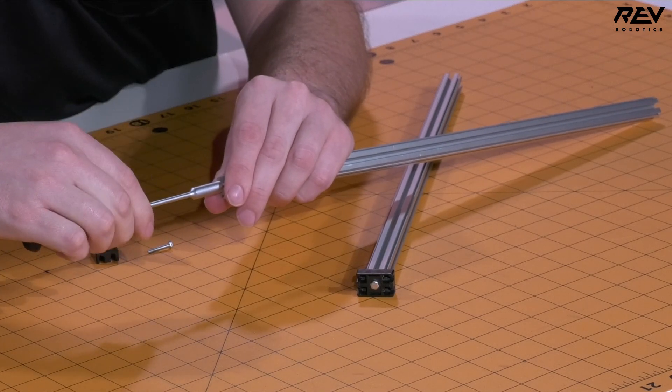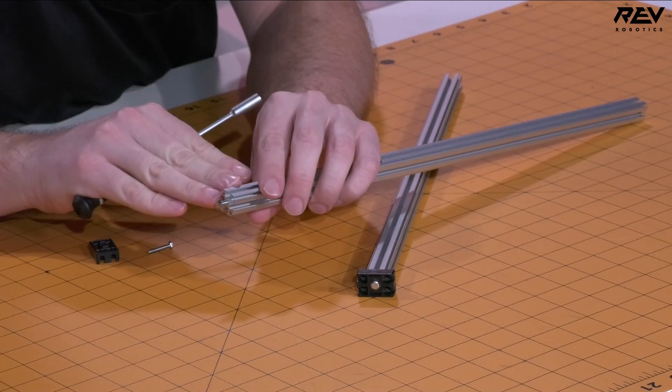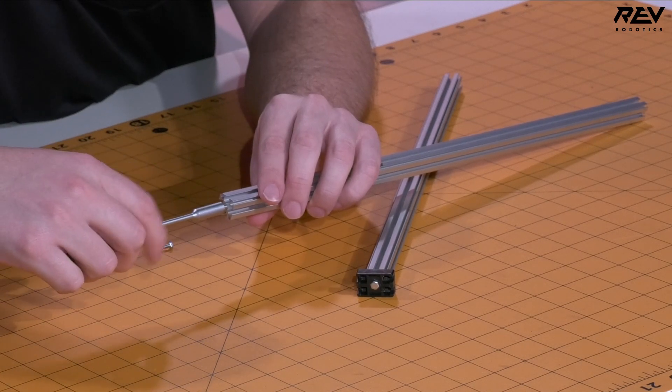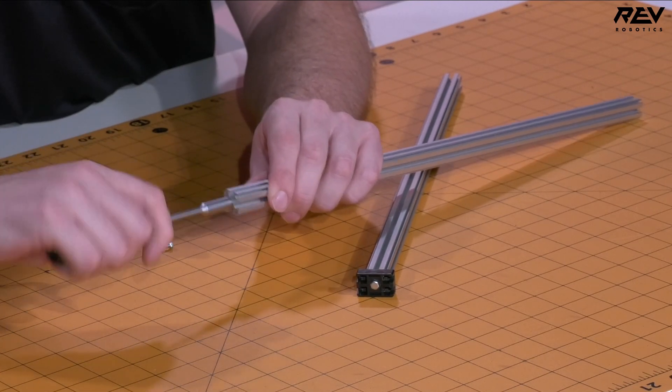Now one of the things that is a typical failure point when you're trying to tap the end of the extrusion is you'll start to hit a point where there might be a little bit of chip buildup from the aluminum.